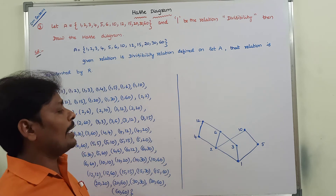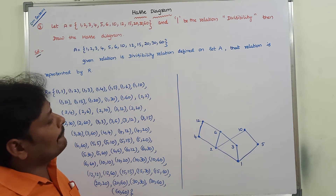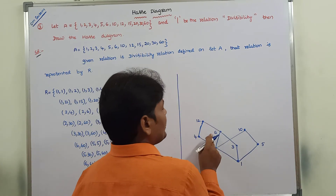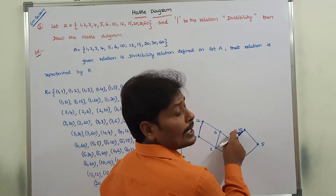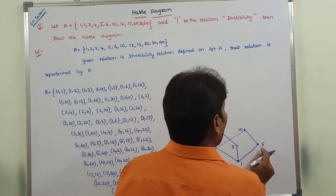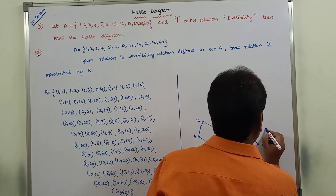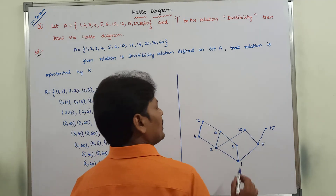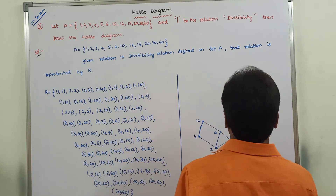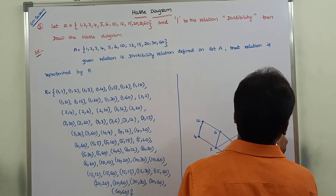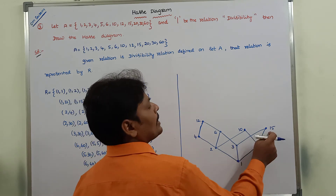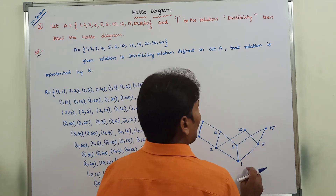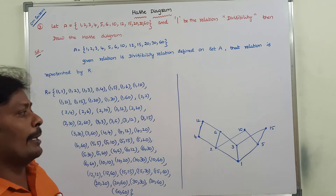Next element is 15: 12 does not divide 15, 6 does not divide 15, 10 does not divide 15, but 5 divides 15 and 3 divides 15, so we draw an edge between 3 and 15 and between 5 and 15. By transitivity 1 divides 3 and 3 divides 15, so 1 automatically divides 15. Similarly 1 divides 5 and 5 divides 15, so 1 also automatically divides 15.